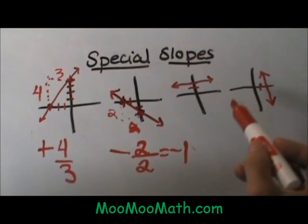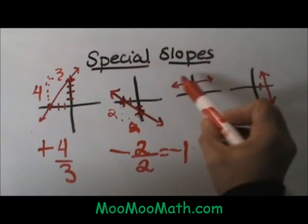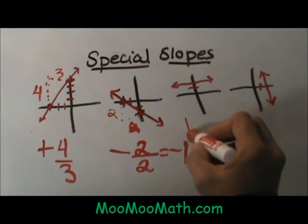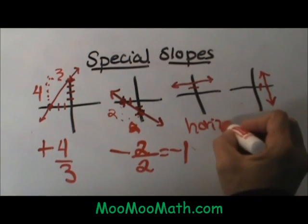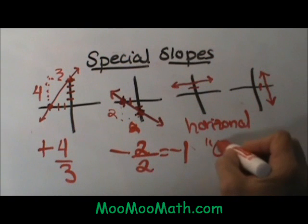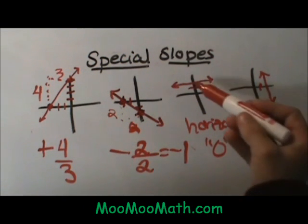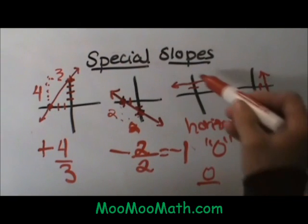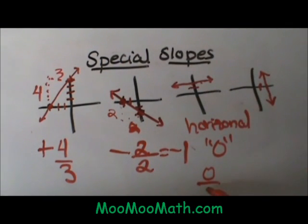Now let's look at our two special cases. This one does not go up or down, but it is a horizontal line. Any time you have a horizontal line you are going to have a slope of 0. Why is that? You have a rise of 0 and a run of any value. Let's say a run of 1, so our slope will be just plain old 0.